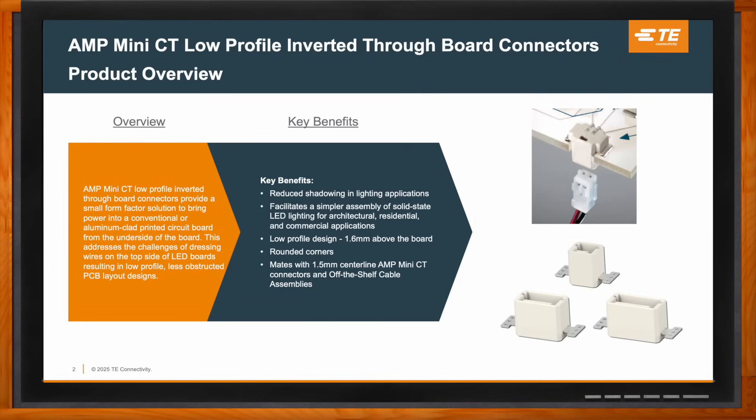The low profile form factor combined with the rounded edge design allows for minimal shadowing, which is really a benefit in lighting applications. The underside mating mechanism also facilitates a simpler assembly for LED lighting and architectural residential and commercial applications. Last but not least, these new connectors mate with our legacy 1.5 millimeter centerline AMP Mini CT connectors, where we offer the components as well as off-the-shelf cable assemblies for our customers.